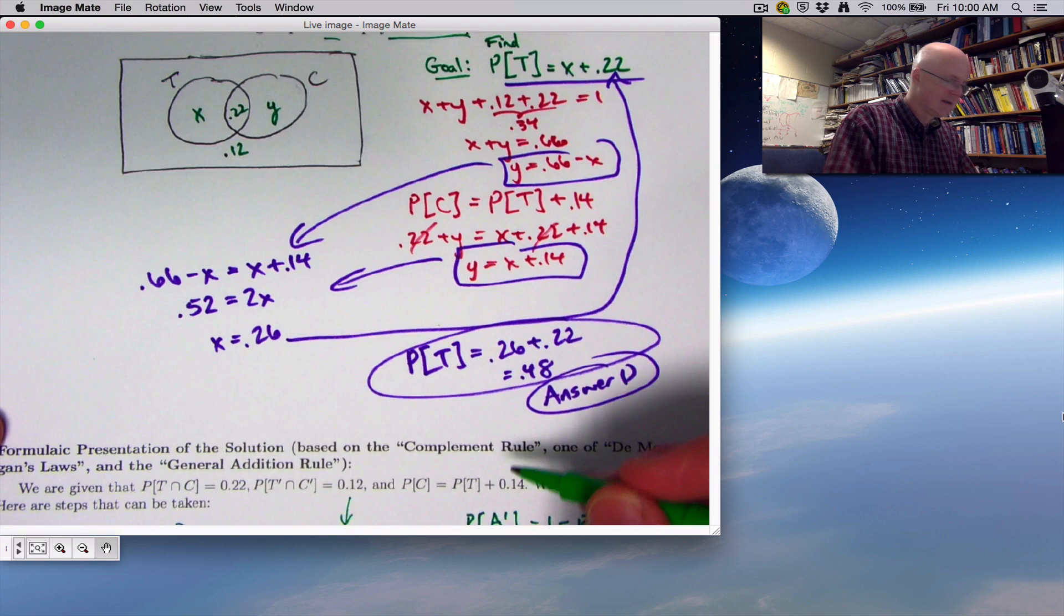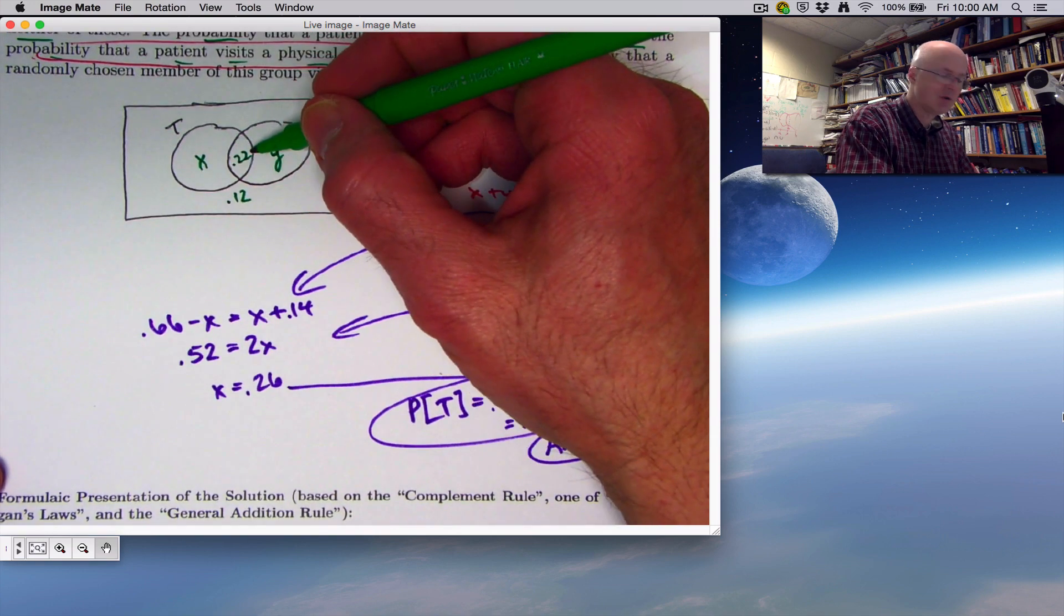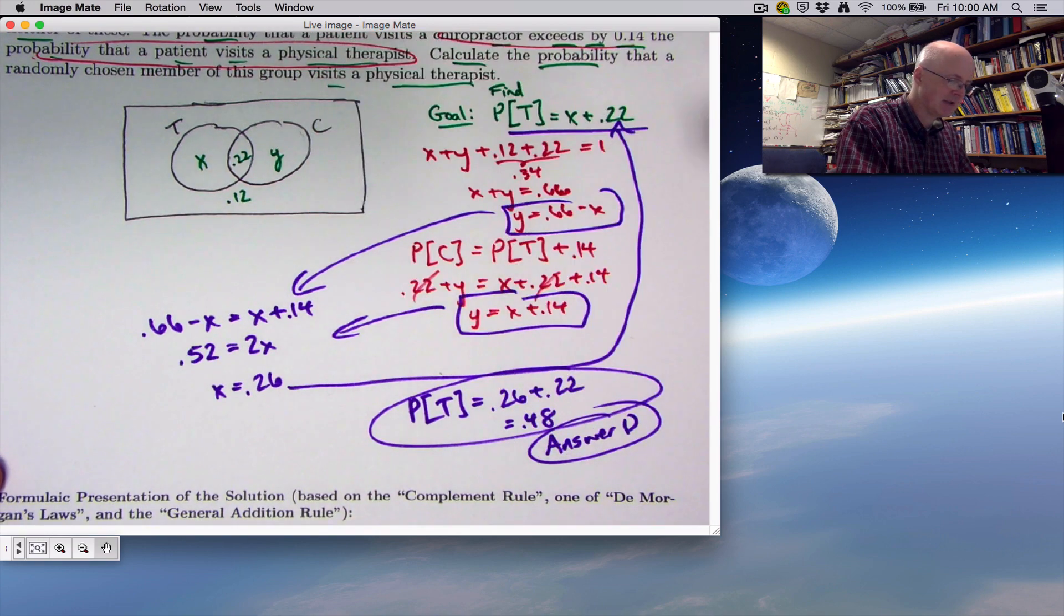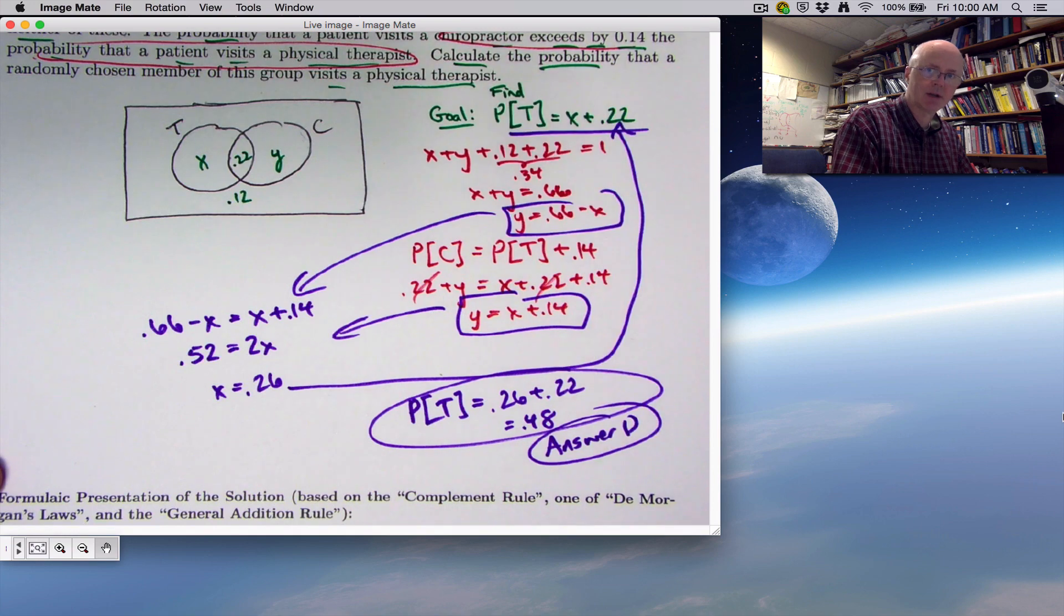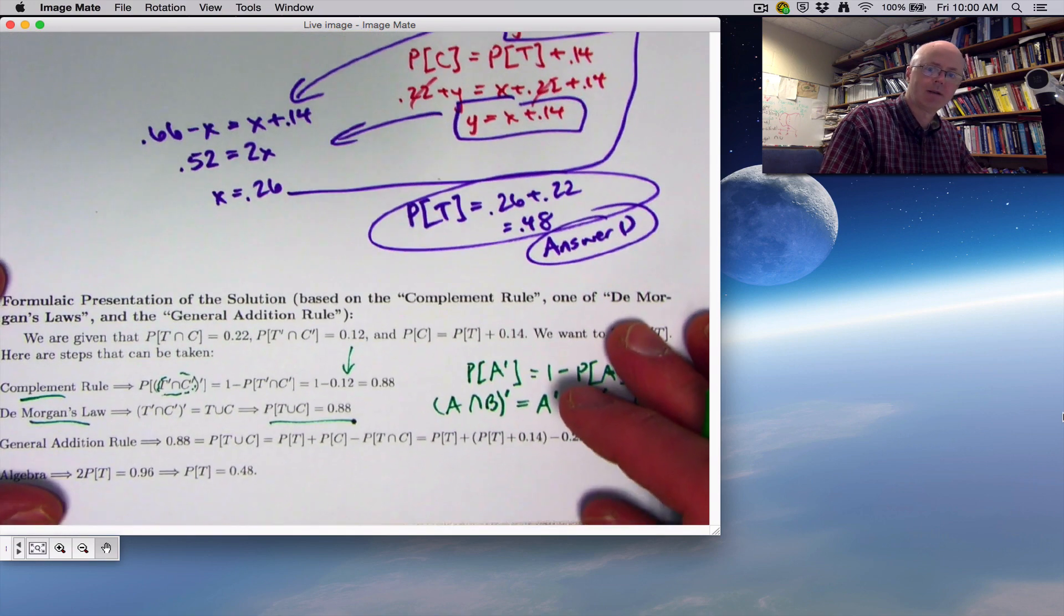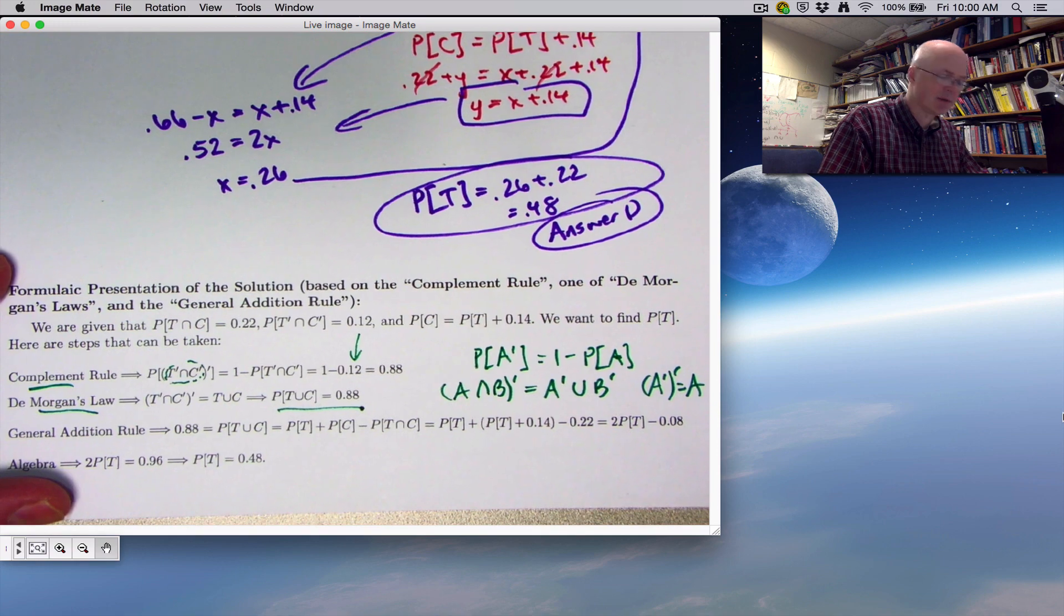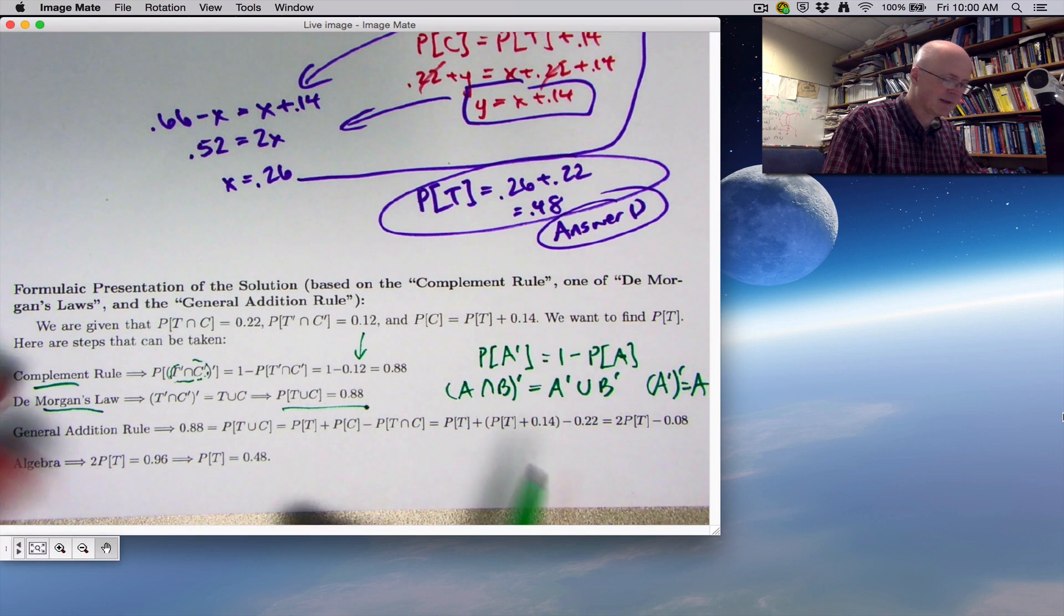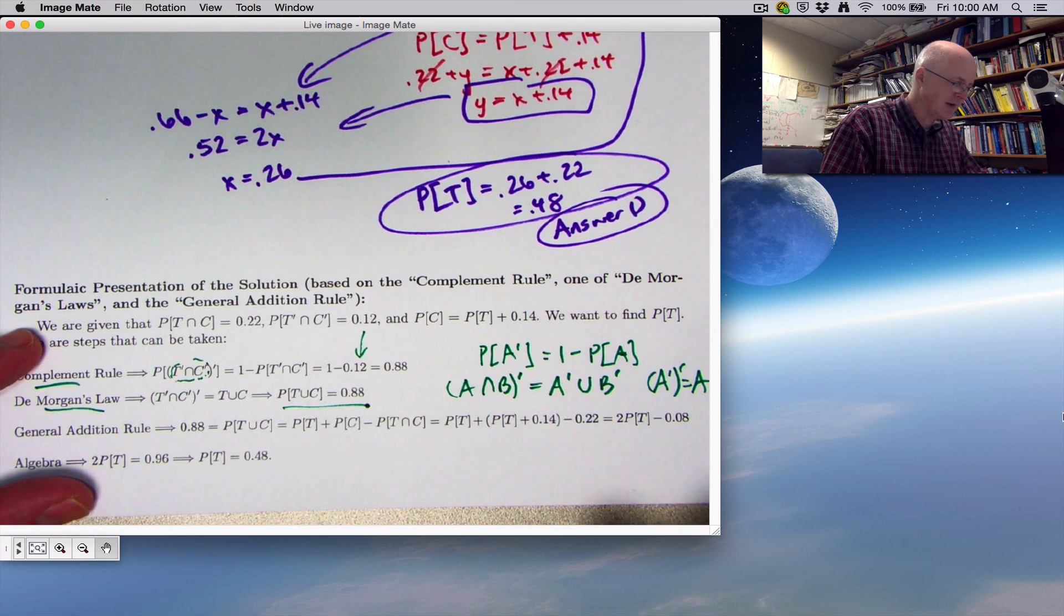This is representing X plus 0.22 plus Y. That has to equal 0.88. You didn't see it in my solution at all - this is a different method I'm showing you. It's slightly different algebra with different symbols, but we'll get to the same final answer of 0.48 in the end.